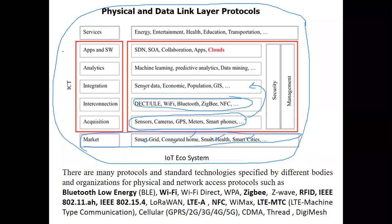Once we have collected the data — sensor data, census data, economic population, GIS, etc. — we will send it to a database server where we will have a lot of data, and we can apply smart algorithms to get patterns. Those smart algorithms are known as machine learning. Machine learning will apply to see the patterns, to predict, and then analyze incoming data. The algorithm will predict what we should do in future against that value.